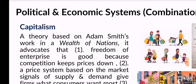Capitalism has several assumptions. The first one is that freedom of enterprise is good because competition keeps prices down. Freedom of enterprise means that private people are able to start their own businesses. In a capitalist economy, specifically a market system, regular people can just start their own business. Freedom of enterprise creates intense competition among businesses, and competition keeps prices down because price is the primary determinant for consumers to decide what to buy.